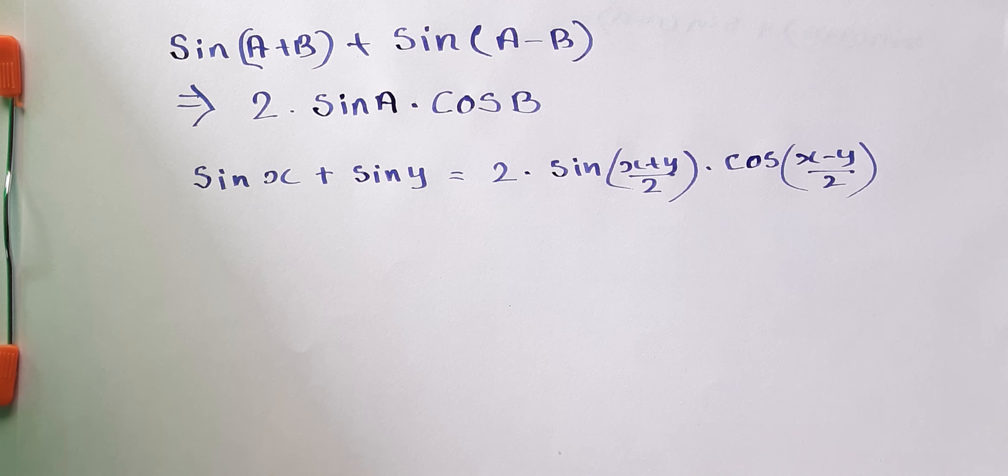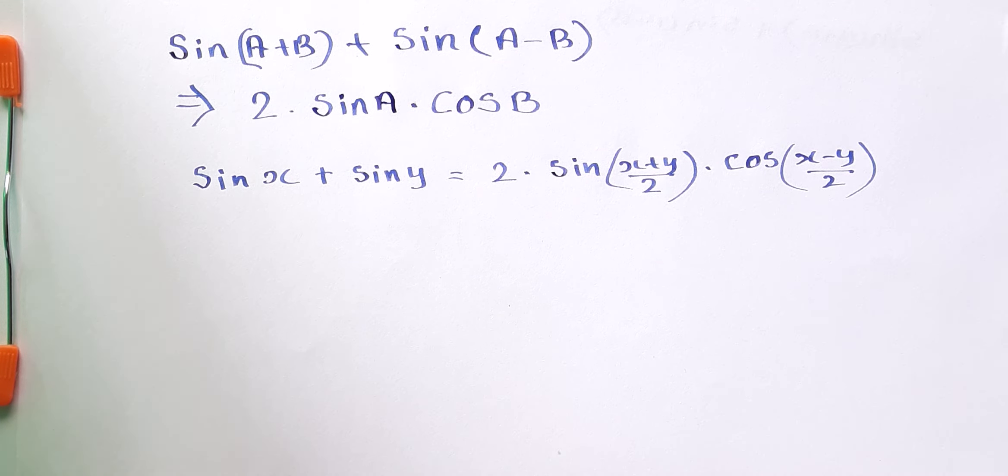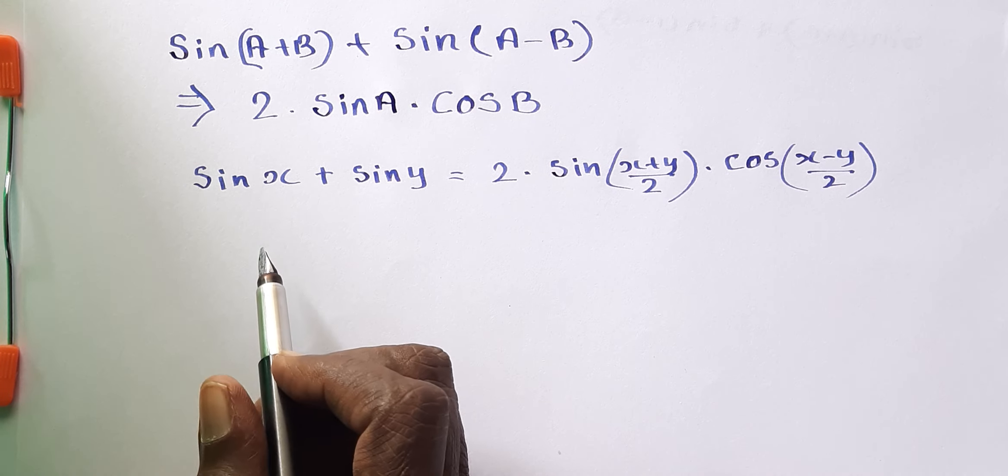Some students ask why we're going to divide by 2. Because there is no need otherwise, so we must find the value equal to X and Y for A plus B and A minus B. That's all. OK, this is the natural doubt all are doing here.